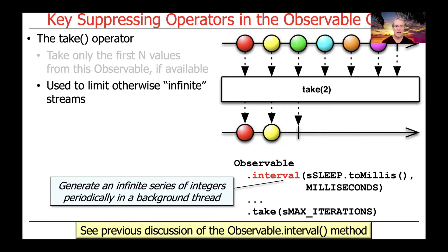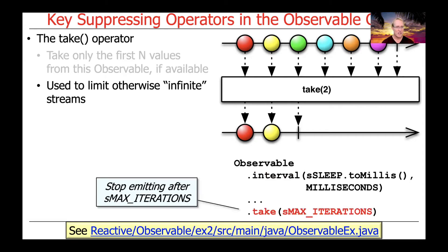You can use take to limit otherwise infinite streams. For example, we talked earlier about the interval factory method operator, which can be used to generate an infinite sequence of integers periodically in a background thread. Since we don't want this program to run endlessly, we can use the take suppressing operator to stop emitting after a maximum number of iteration values are emitted. We'll see this when we look at the case study at the end of this lesson.